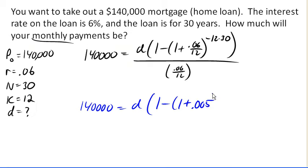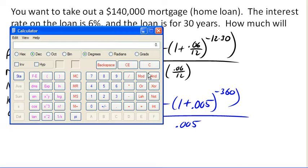negative 12 times 30, happen to know that one, over .005. Okay, so now let's go ahead and evaluate this. So I've got 1 plus .005 raised to the power of 360, make it negative. It gives me .166 here.